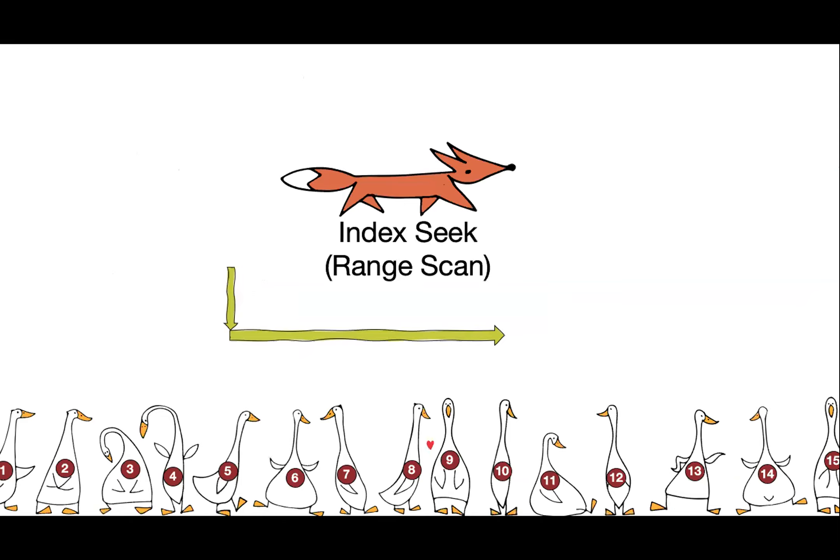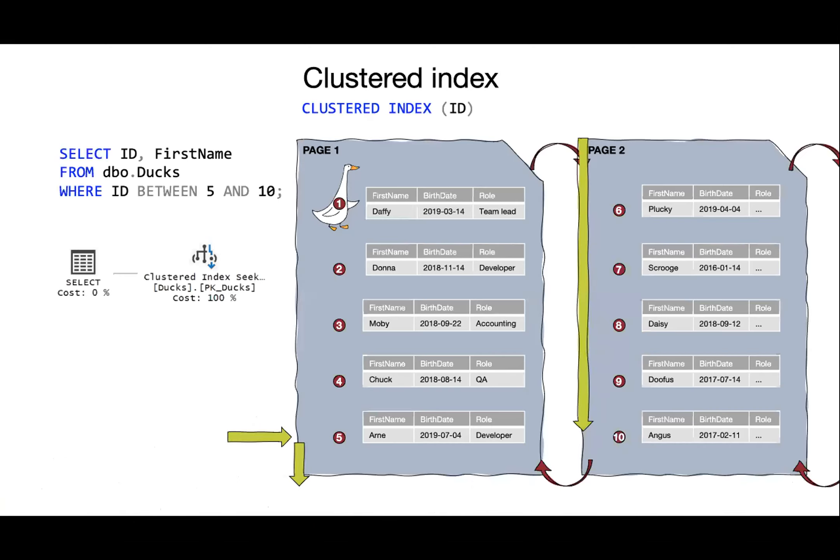This is the clustered index seek operator — the parenthesis means it's clustered. Without the parenthesis it's a non-clustered index seek, but the principle is the same: you go directly to the row you're looking for. This is a super fast operation. A version of the index seek is known as the range scan — same idea but the argument could be WHERE id >= 5 AND id <= 10. We find number five instantly using the index, then just follow along in the index order until we reach something larger than ten and we stop.